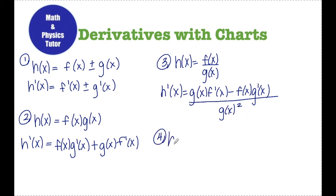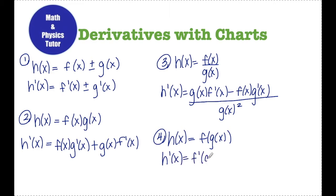Another thing we need to remember is if h of x is written as a composition of functions — say h is equal to f of g of x — that's when I would apply the chain rule, which says derivative of the outside, leave the inside alone. So f prime of g of x, times the derivative of the inside, so times g prime of x.